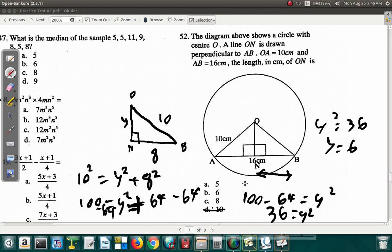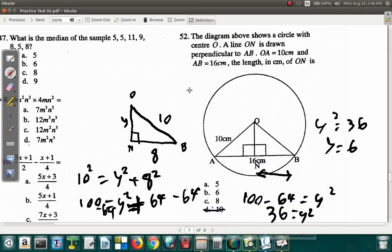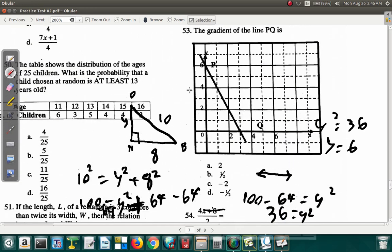Alright. So in any case, 52 is B. So question 52 is B. Alright. Let's look at question 53.